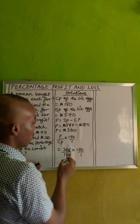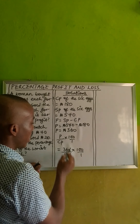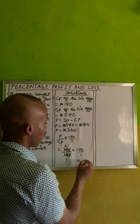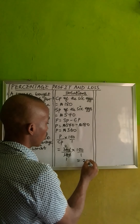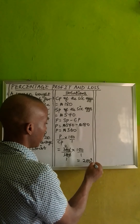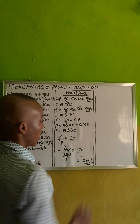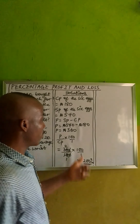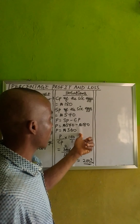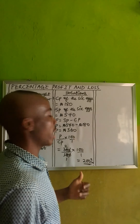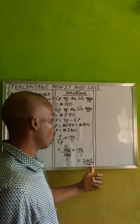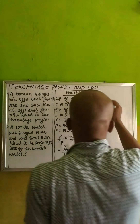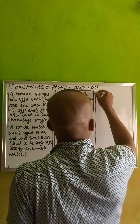1 zero cancels 1 zero. 18 into 36 is 2. 2 times 100 will give us 200%. The percentage profit of these 6 eggs is 200%. Let's proceed with the second question.